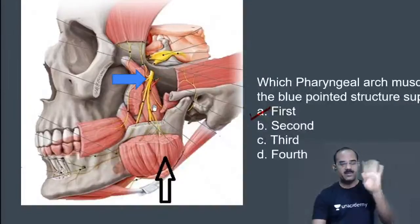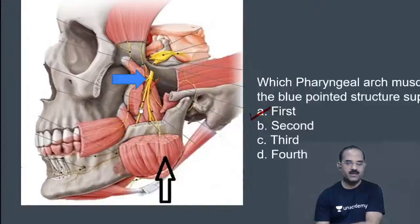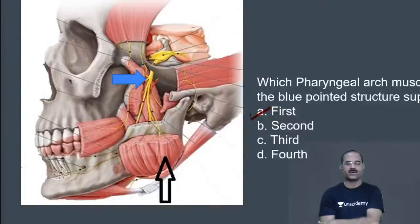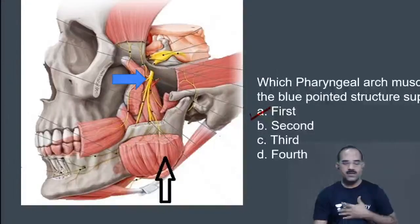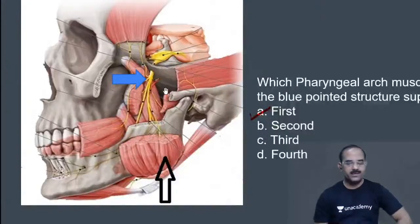Remember — the nerves are lying on the medial pterygoid. The lateral pterygoid is what has been cut. All the nerves lie on the medial pterygoid. Is this clear to all of you?